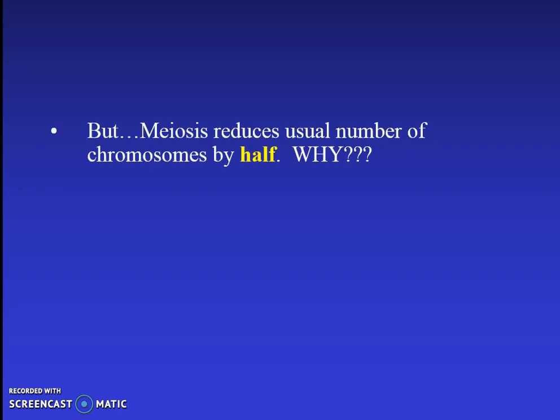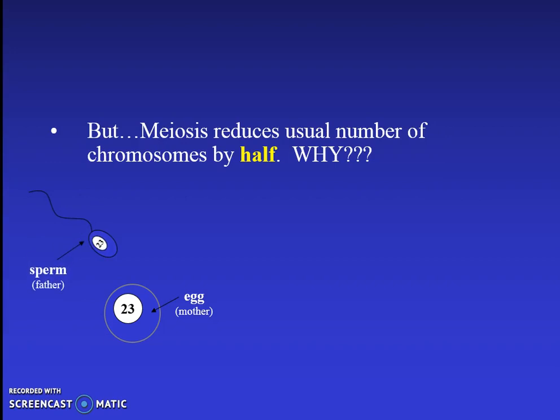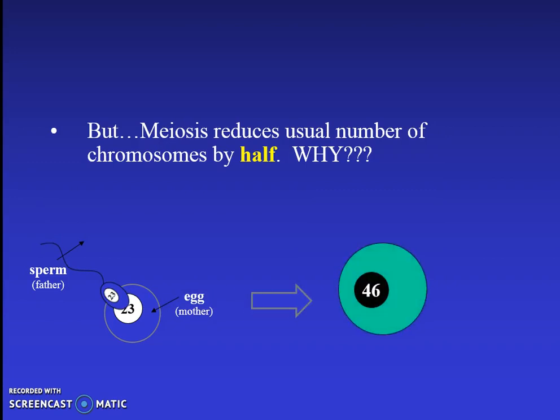So what should the number of chromosomes be in sperm and egg? We need them to be reduced by half from the normal number. If I have 23 chromosomes in the egg and 23 in the sperm, then when they combine during fertilization I get my normal amount in my zygote: 46. That's why we say I have 23 from mom and 23 from dad — 23 homologous pairs — combining for a total of 46.